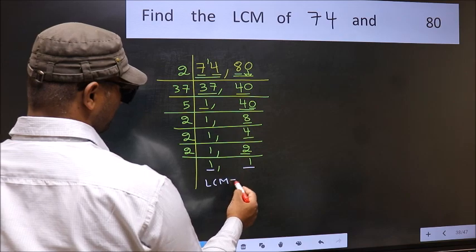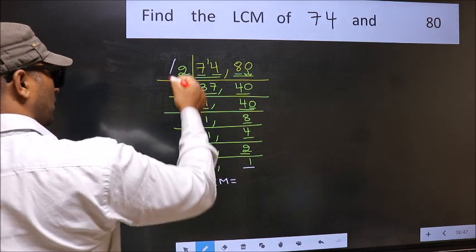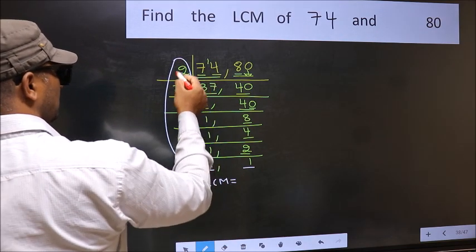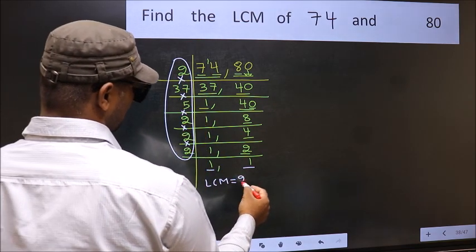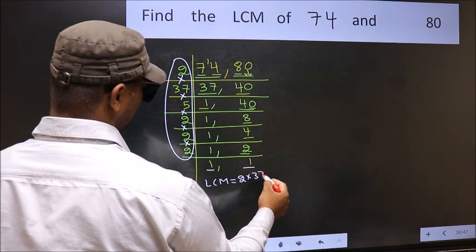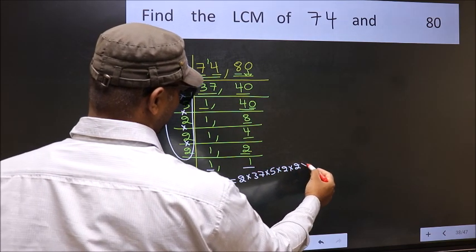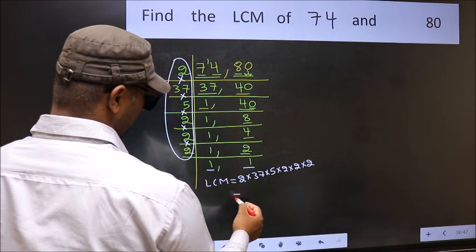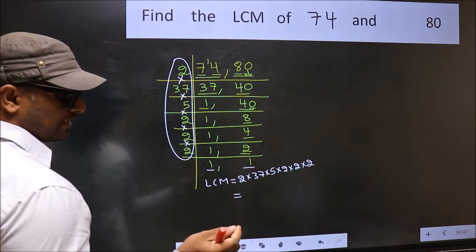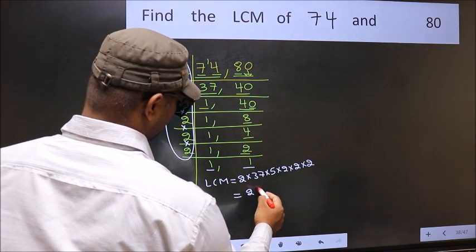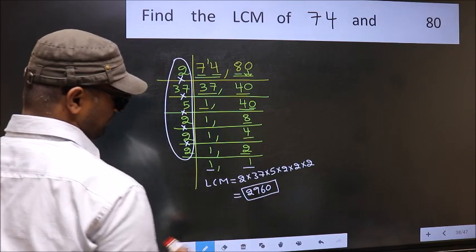So our LCM is the product of these numbers: 2 × 37 × 5 × 2 × 2 × 2 × 2 × 2. When we multiply these numbers, we get 2960 as our LCM.